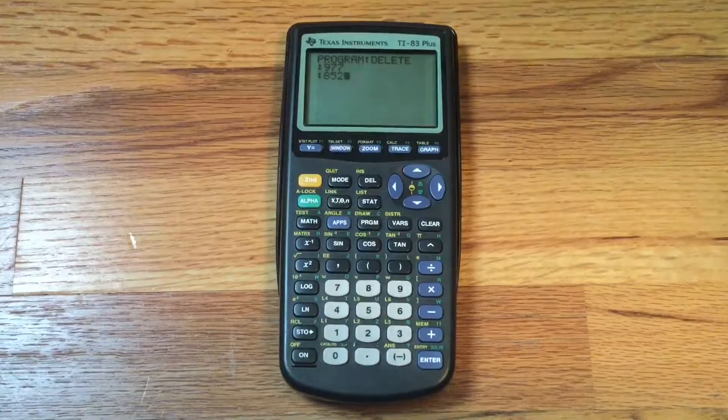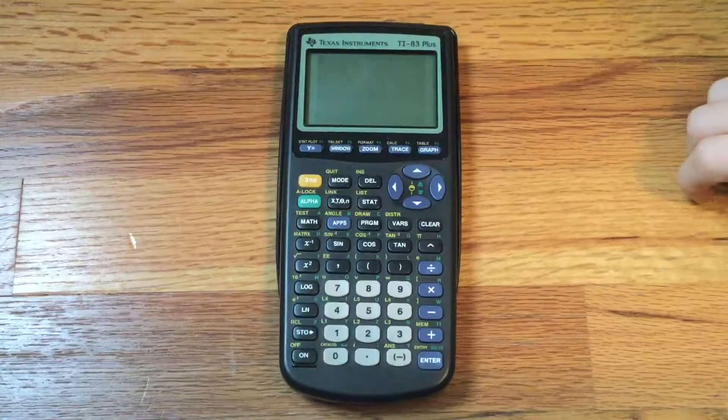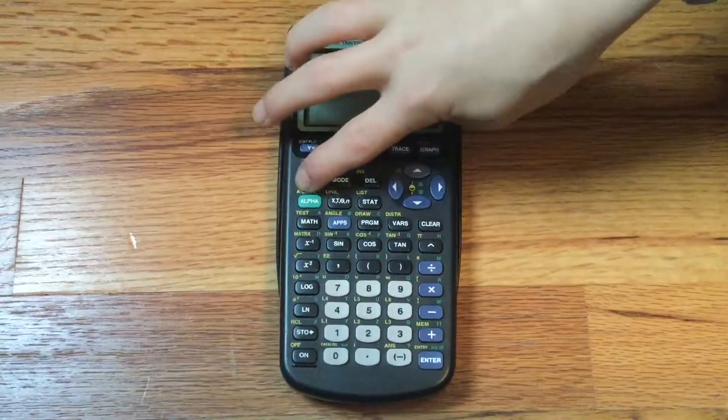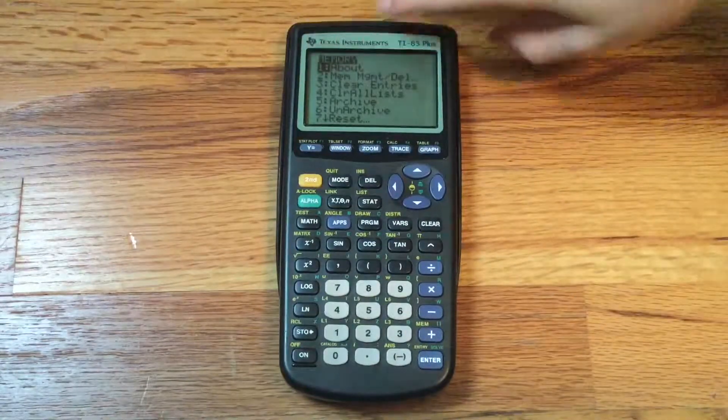Now what you want to do is quit out, so second mode will quit. Then you're going to hit second, then plus, which is going to go to your memory. You can see all about your memory here.